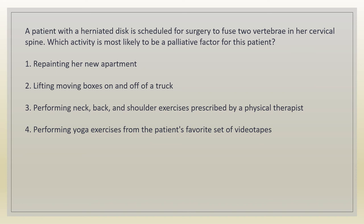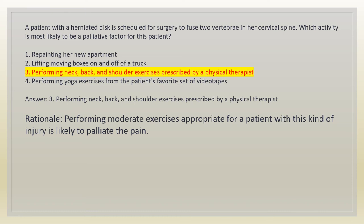A patient with a herniated disc is scheduled for surgery to fuse two vertebrae in her cervical spine. Which activity is most likely to be a palliative factor for this patient? 1. Repainting her new apartment. 2. Lifting moving boxes on and off of a truck. 3. Performing neck, back, and shoulder exercises prescribed by a physical therapist. 4. Performing yoga exercises from the patient's favorite set of videotapes. Answer: 3. Rationale: performing moderate exercises appropriate for a patient with this kind of injury is likely to palliate the pain.